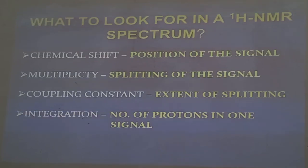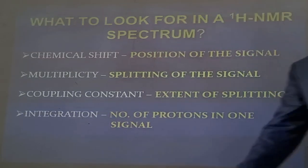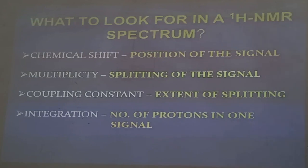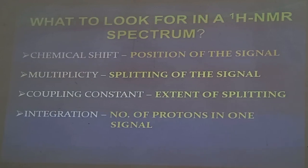These are the four basic parameters to look for in a proton NMR spectrum: chemical shift is the position of the signal; multiplicity is the splitting of the signal; coupling constant tells you how much the signals are split; and integration tells you the number of protons associated with each signal.